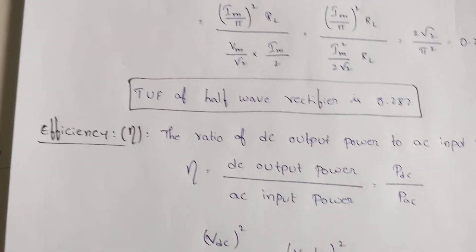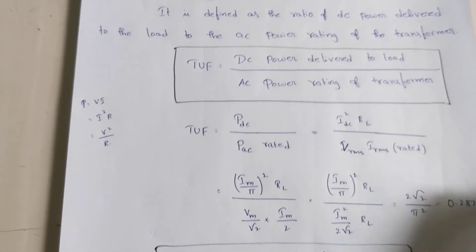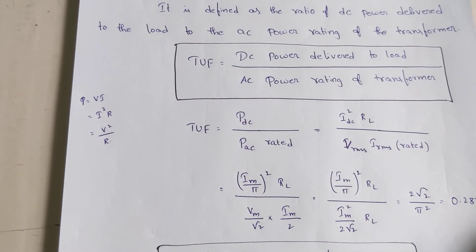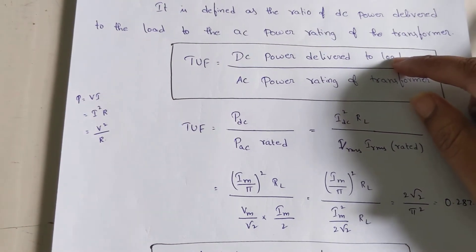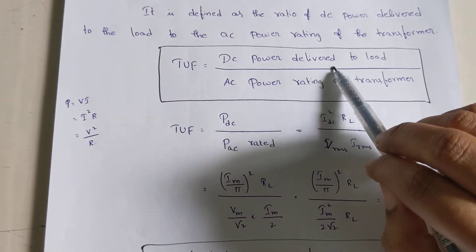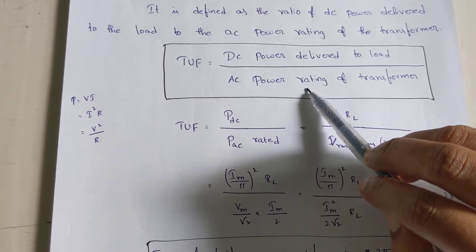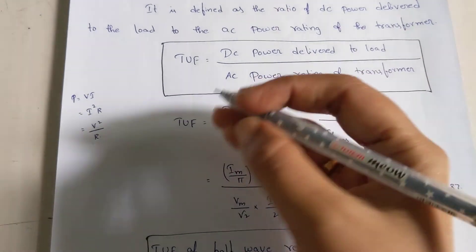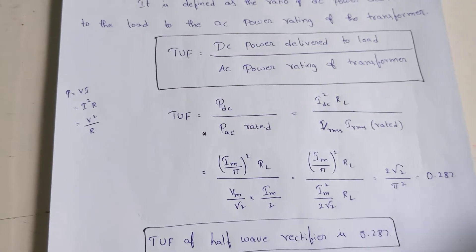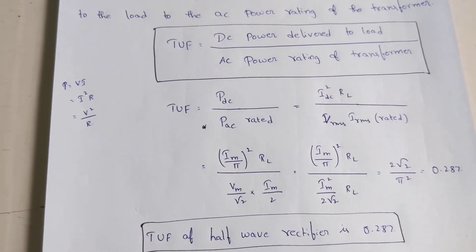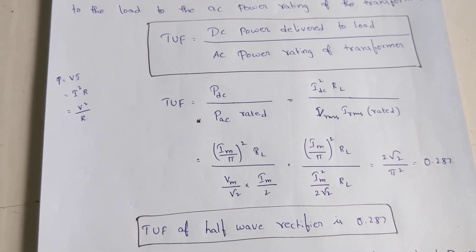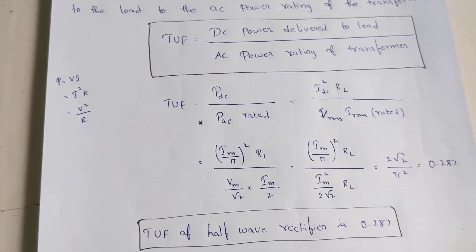The transformer utilization factor (TUF) is the ratio of DC power delivered to the load to the AC power rating of the transformer — note this is different from efficiency. TUF = PDC / PAC(rated). PDC is given as IDC² × RL, and for the AC rated power we use VRMS × IRMS, where IRMS of the transformer winding carries only half the current — it is IM / 2, not IM / √2. This is an important distinction.